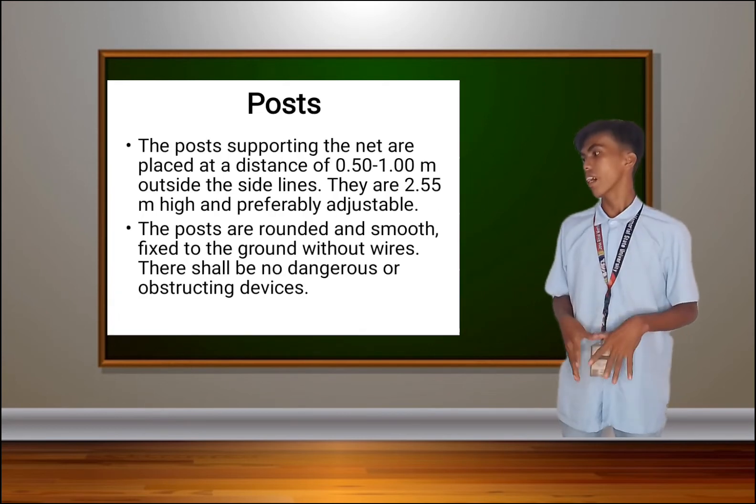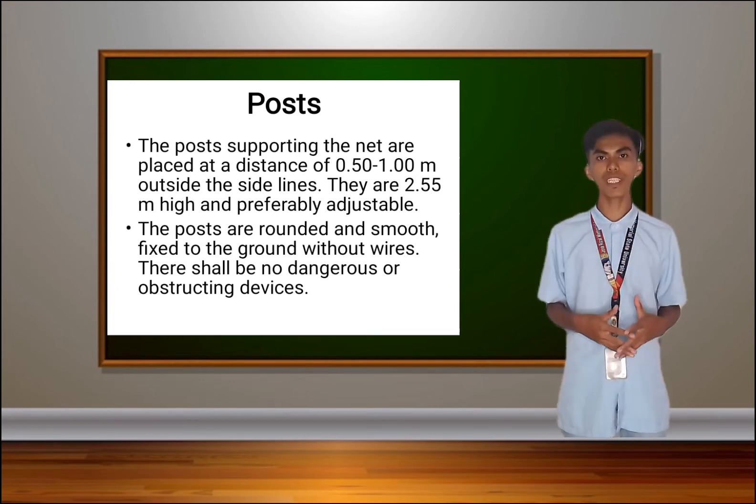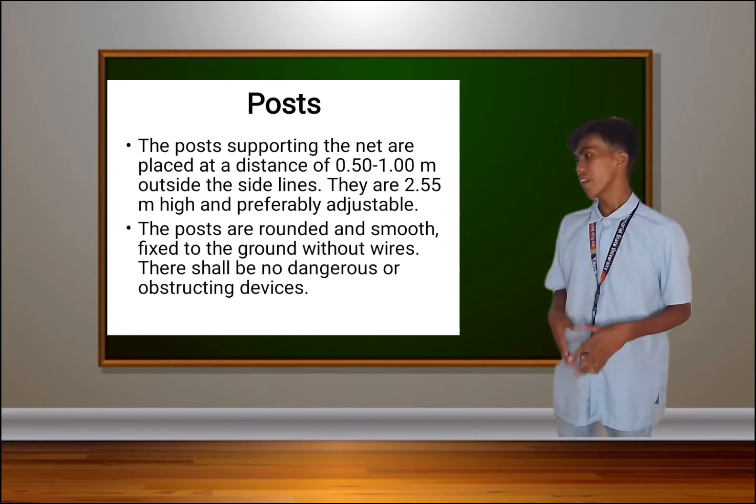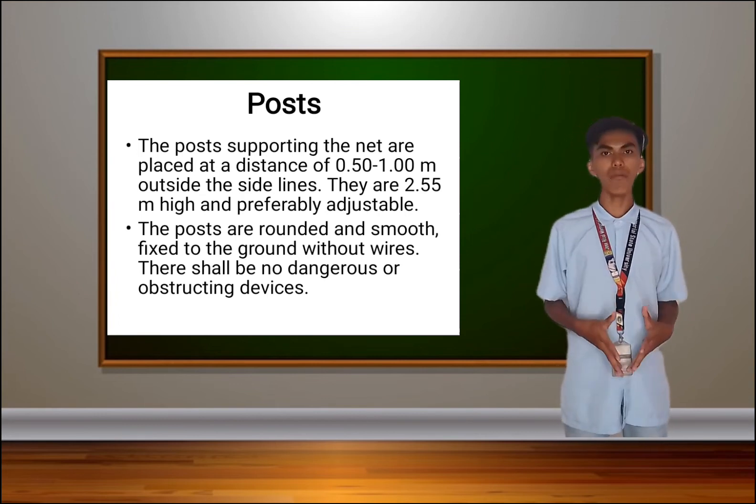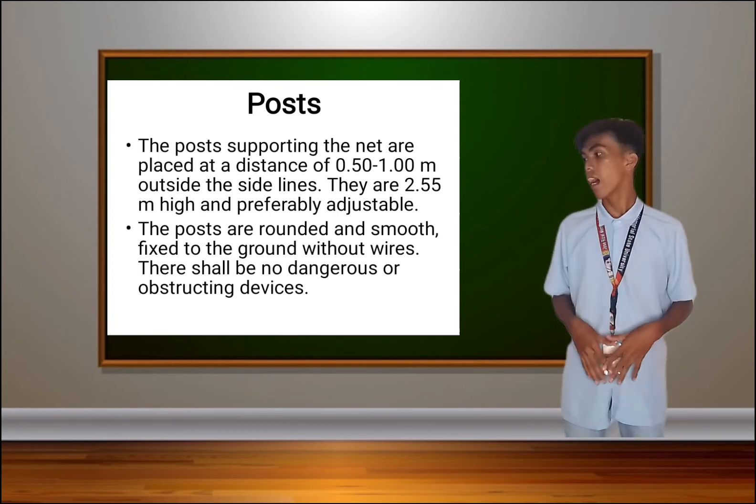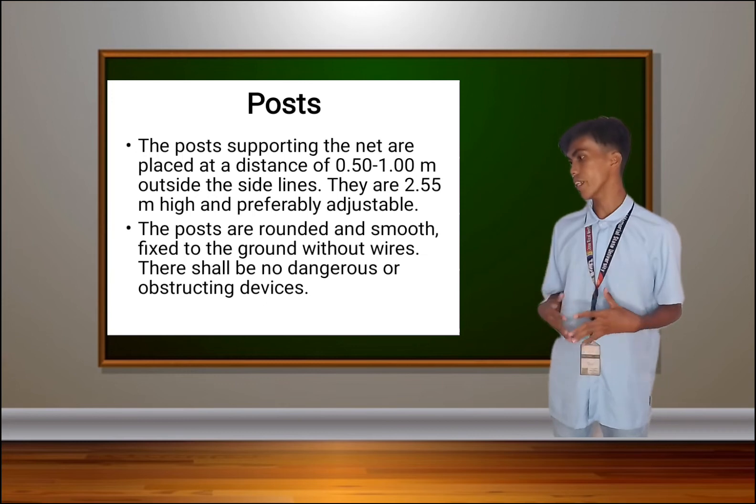Next is the posts. The posts supporting the net are placed at a distance of 0.50 to 1 meter outside the side lines. They are 2.55 meters high and preferably adjustable. The posts are rounded and smooth, fixed to the ground without wires.